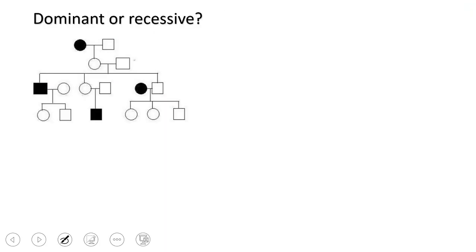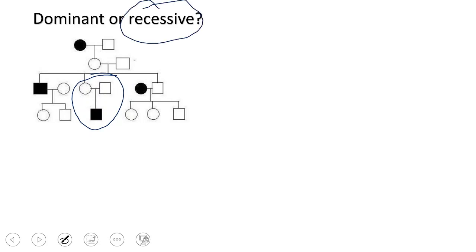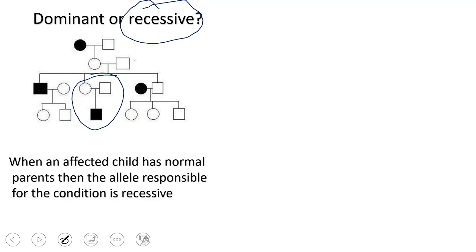Now, looking at another pedigree: is the condition dominant or recessive? I look at this family where both parents are normal but they have an affected child. This child must have inherited the allele for the condition from the parents, but the parents don't show the condition. If they have the allele but don't show it, the allele is hidden — it is recessive. The rule is: when an affected child has normal parents, the allele responsible for the condition is recessive.